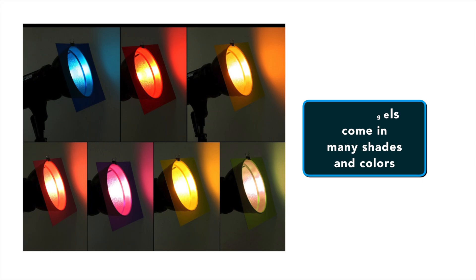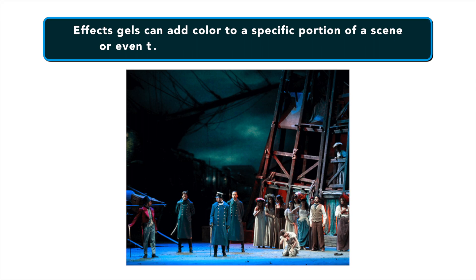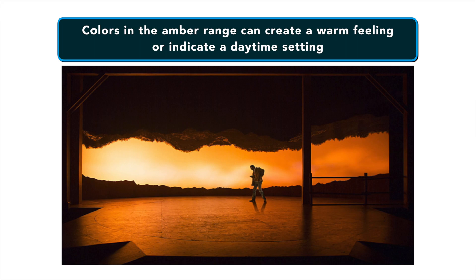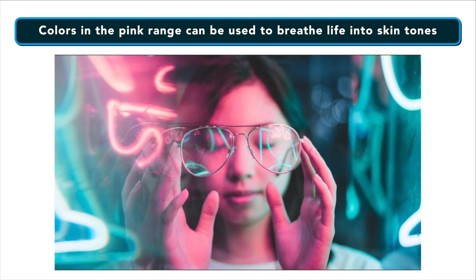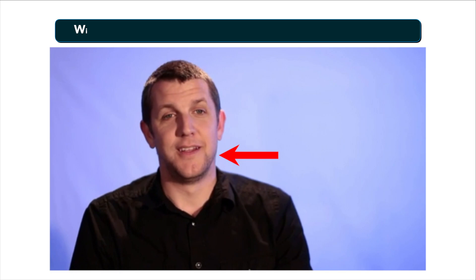Effects gels are available in numerous shades. Before the days of CGI and digital effects, color effects gels were one of the most important ways to change the ambiance of a scene, and they're still popular for both stage and screen. These can add color to a specific portion of a scene such as a background, or give an entire scene a specific mood. Colors in the amber range can create a warm feeling or indicate a daytime setting. Colors in the blue range can create a cold feeling and give the impression of a night scene. Colors in the pink range can be used to breathe life into different skin tones. Take a look at this scene and notice how the warm amber gel over the background lights gives the scene a warm feeling. Switching to a blue gel makes the mood feel much colder, and adding a pink gel to the light on your subject warms up those skin tones.